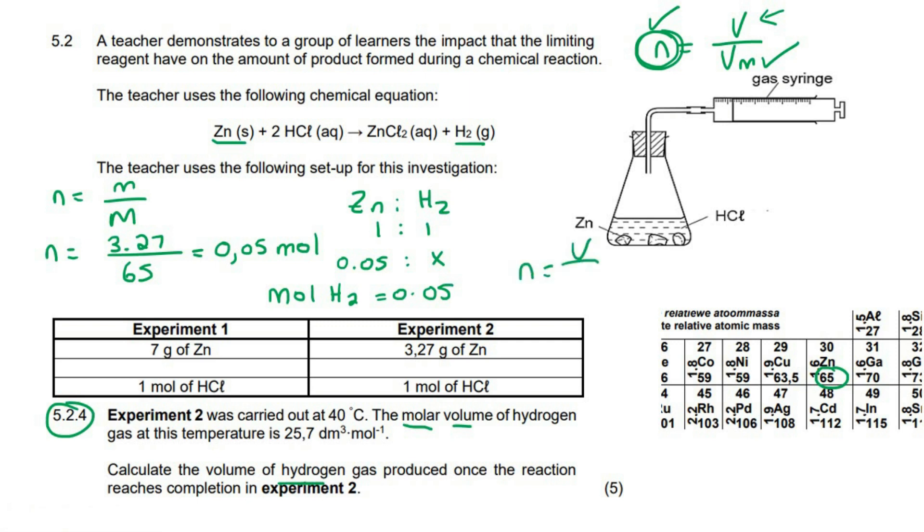Now we can use our formula where we know the moles. We don't know the volume, but we know the molar volume that they've asked us to use is 25.7. So remember that, this is molar volume. It's not volume, it's molar volume. So it's the Vm. And then if you just take this and you multiply it up to the top, you're going to end up with the volume as, if you round that up, you are going to get that as 1.285, and that would be in decimeters.